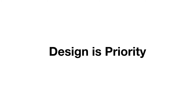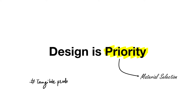While we all know that design is the priority while designing or creating anything around us, when it comes to tangible products like furniture, automobile, or any daily use products, it is material selection that also plays a major role. Material selection can make or break a product. The same criteria applies in the fashion industry as well.